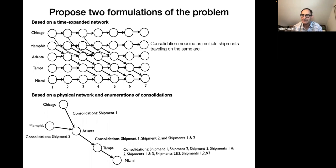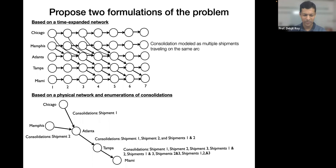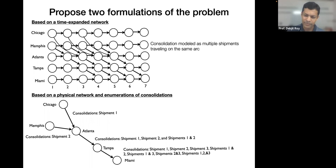A question asks how the methodology would help solve a flexible routing problem, possibly meaning routing under disruption. It is unclear what exactly is meant, but one interpretation could be how this adapts to handle uncertainty — something we haven't worked on yet but that is certainly on our minds.